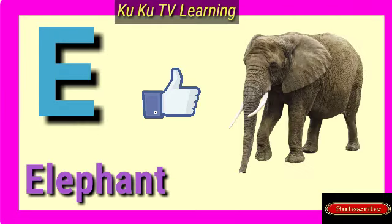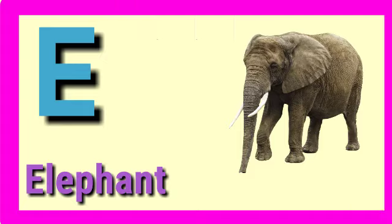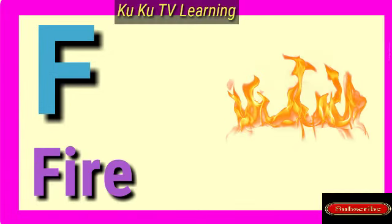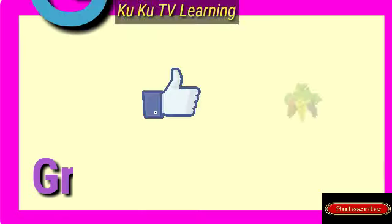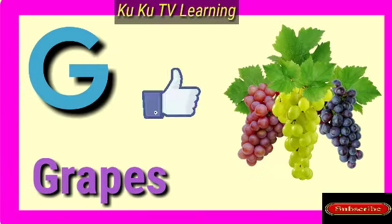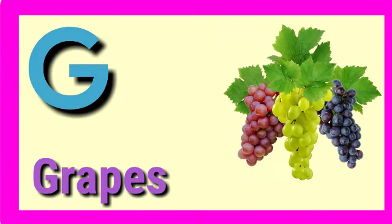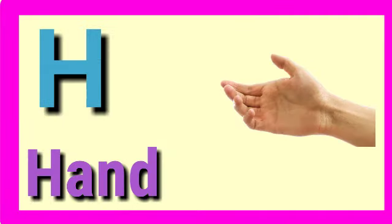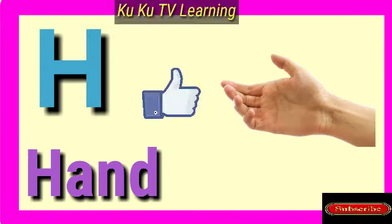E for elephant, elephant means heart. F for fire, fire means aag. G for grapes, grapes means angoor. H for hand, hand means heart.